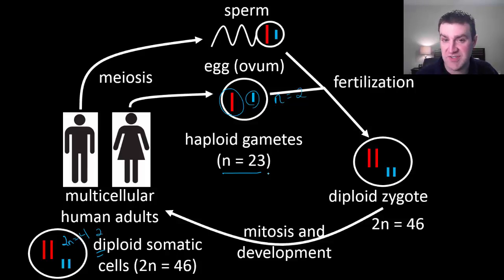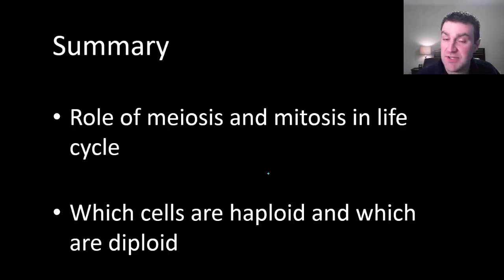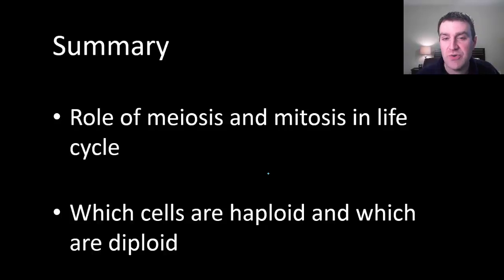Also notice where cells are diploid and haploid. That's really it for this video — don't just memorize this, make sure you can think your way through this diagram. See you next time.